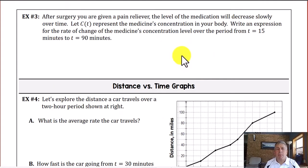In sample three, it reads after surgery, you're given a pain reliever. The level of medication will decrease slowly over time. And generally, medication doesn't decrease in your system at a constant rate, but it is an ever-changing rate. So we're going to let c of t represents the medicine's concentration in the body. And we'll write an expression for the rate of change for the medicine's concentration from a period of t equals 15 to t equals 90 minutes. So our t here is our x's, our x values, and then the level of concentration is going to be our y values.